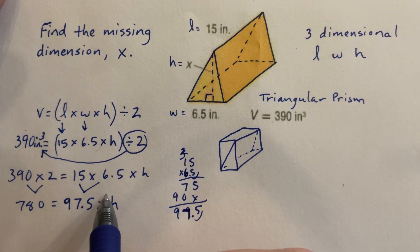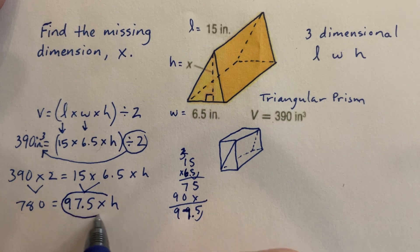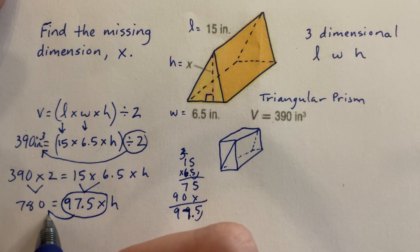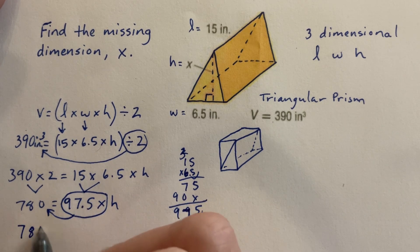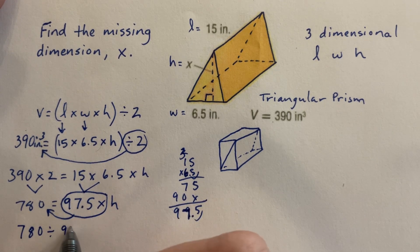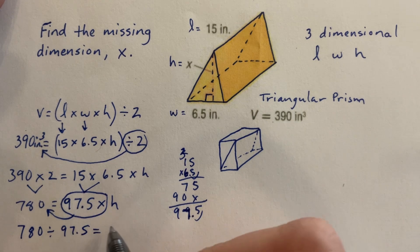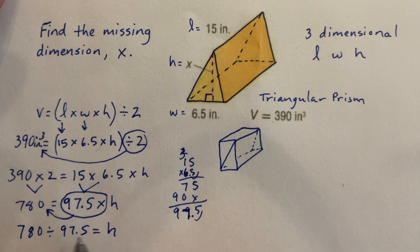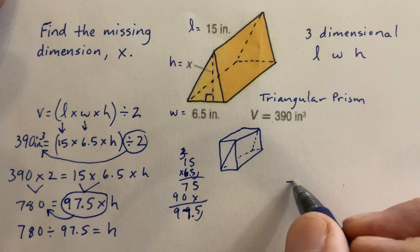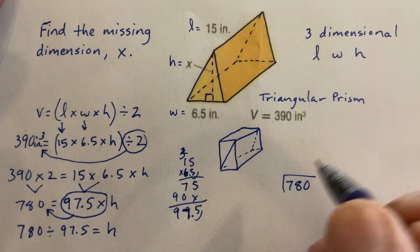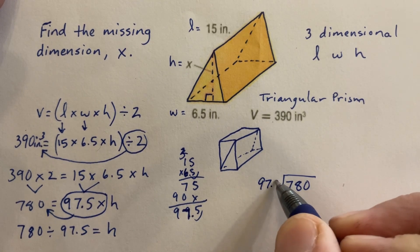Now, we're going to continue to use our inverse operation, which means the opposite. We're going to put this to the other side. The opposite of multiply is divide. So we have 780 that we're going to divide by 97.5. And when we do that, that's going to give us the height here.